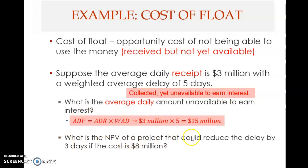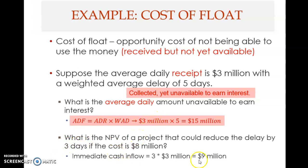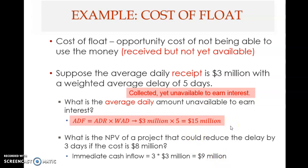What is the NPV of a project that could reduce the delay by three days if the cost is eight million? If you reduce the delay by three days, the benefit is three days multiplied by three million, which equals nine million. This is the present value of your benefit — nine million is released from the fifteen million stuck in the banking clearing system.